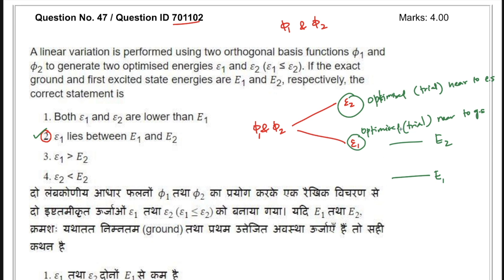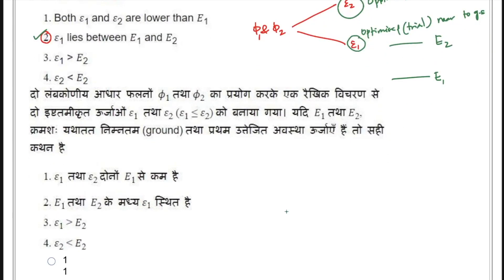If that is true, then the energy levels will be arranged as follows: e1 is the exact ground state energy level and e2 is the exact first excited state energy level. Now, ε1 will always be greater than e1 because the variational theorem says that the energy obtained from a trial wave function is always greater than or equal to the exact energy. So ε1 lies somewhere above e1, and ε2 lies somewhere above e2.